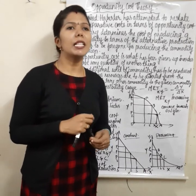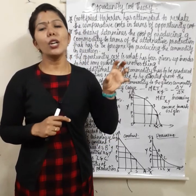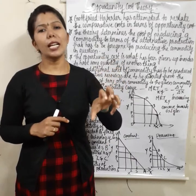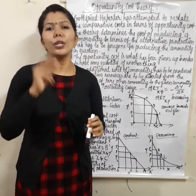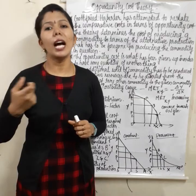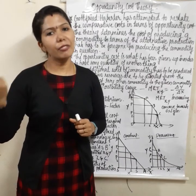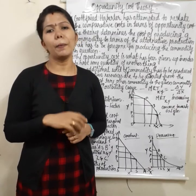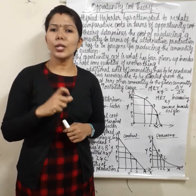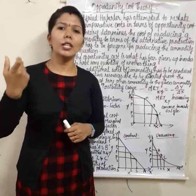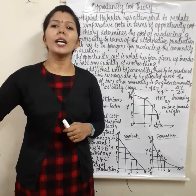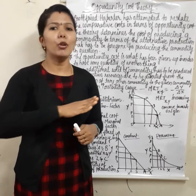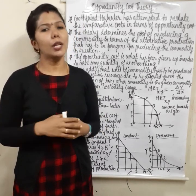We have limited resources. In order to produce more units of one commodity, the country has to sacrifice some units of another commodity. That is the opportunity cost. All countries face this trade-off — if you produce more of one commodity, you sacrifice that other commodity.